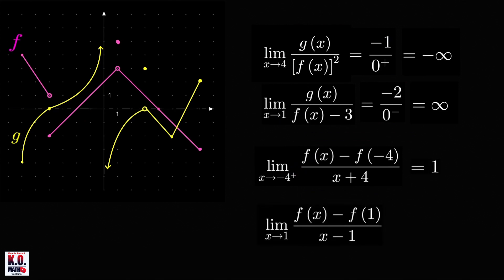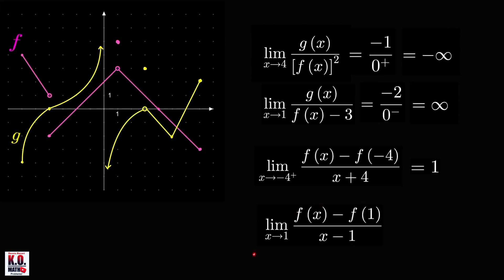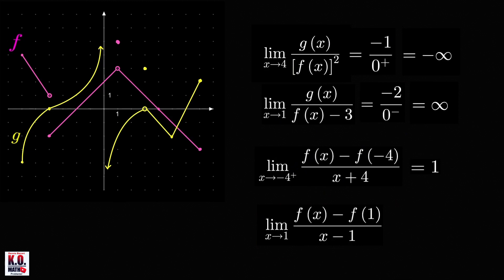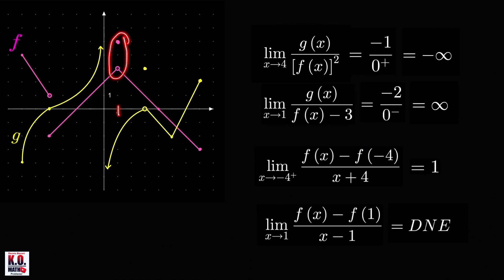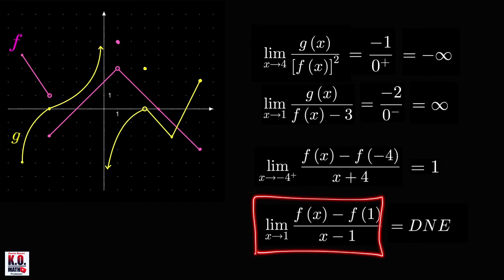Now let's find the limit of this difference quotient as x approaches 1. This limit represents the slope of the tangent line at x equals 1. If you know what a tangent line at a given point means, then the answer is that the limit doesn't exist. Why? Because at x equals 1 we have a discontinuity, and if we have a discontinuity at a number, then there is no tangent line at that point. And because the tangent line doesn't exist, its slope doesn't exist as well. Now, how do we find this limit if we haven't learned the concept of a tangent line yet?